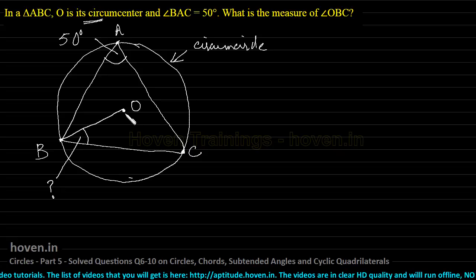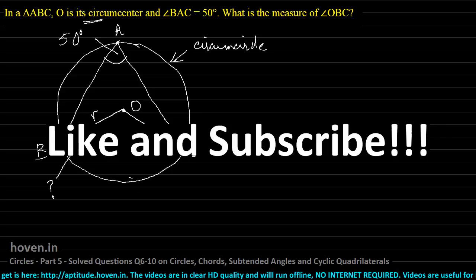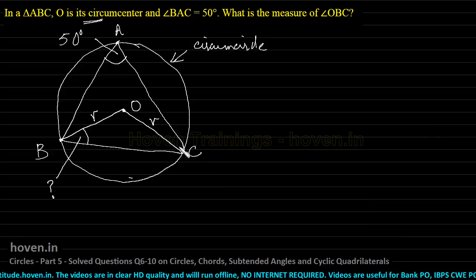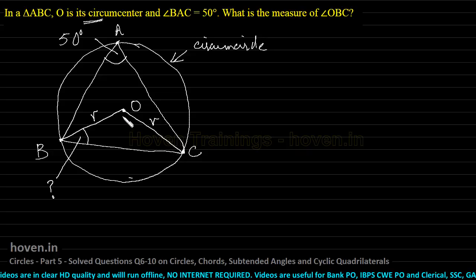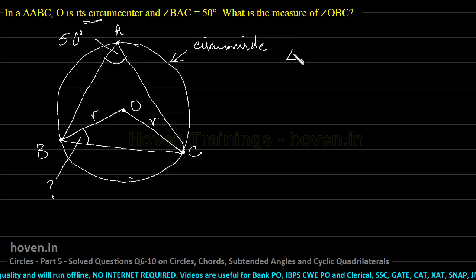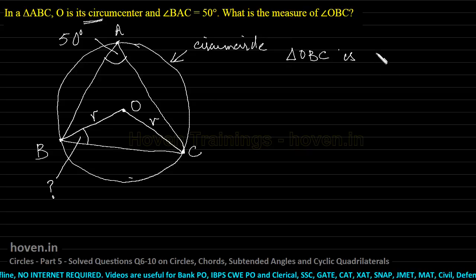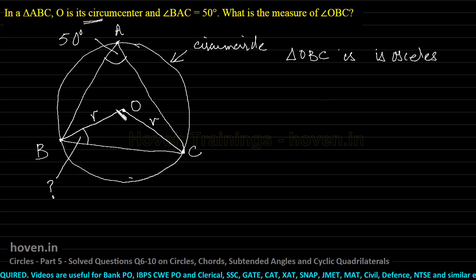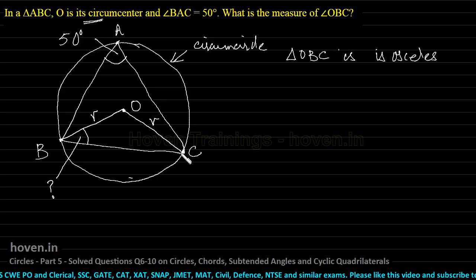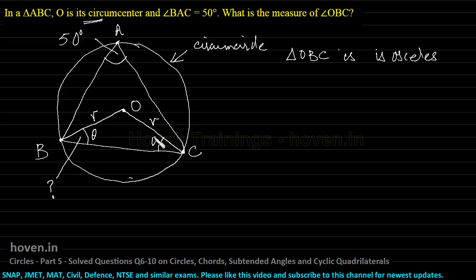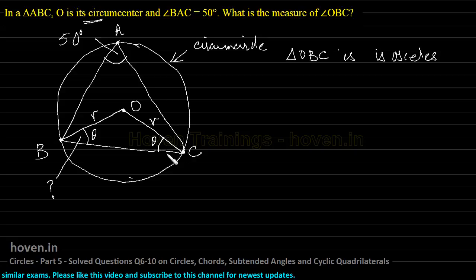Since O is the center of the circle — the circumcenter of the triangle — if we join O to B, then OB is the radius R of the circle. Similarly, if we join O to C, then OC is also the radius R of the same circle. Looking at triangle OBC, we can see that it is isosceles, because two of its sides OB and OC are equal, both being radius R. So if angle OBC is theta, then angle OCB is also theta, since angles opposite equal sides of an isosceles triangle are equal.